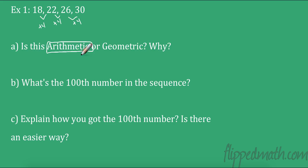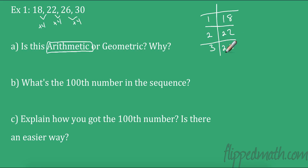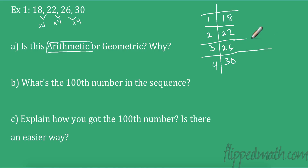What's the 100th term? Let's make a table. The first term is 18, the second term is 22, the third term is 26, and the fourth term is 30. Pause the video and see if you can come up with the 100th term. I know some of you aren't pausing the video — you should really try this. I'm going to try and come up with a faster way. I could add four over and over again, but chances are I'm going to make a mistake, so I'm going to come up with a formula.